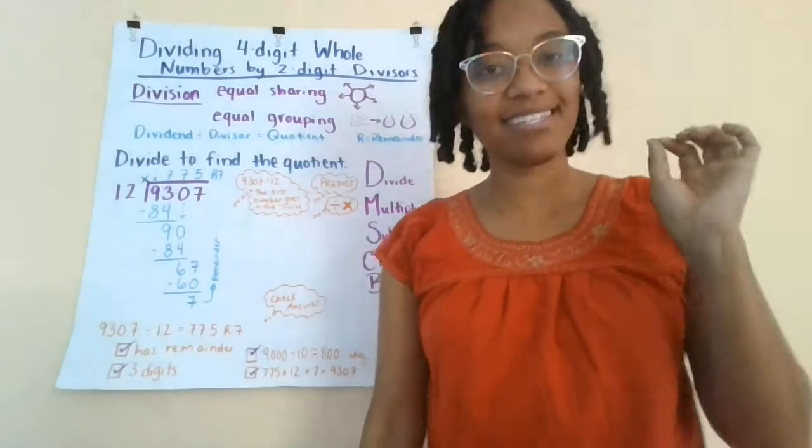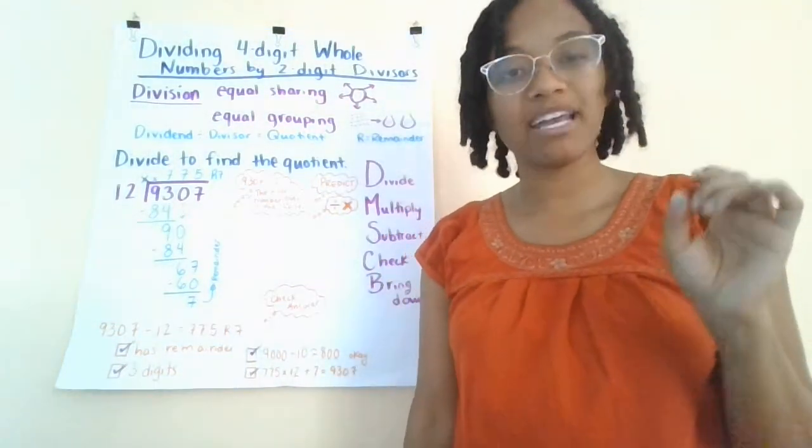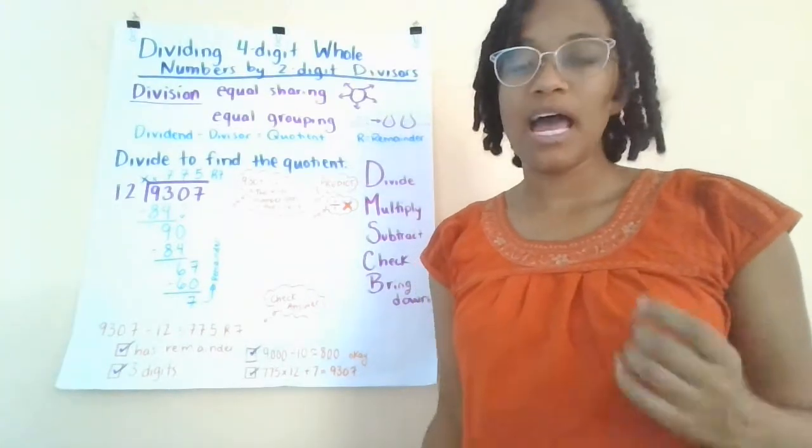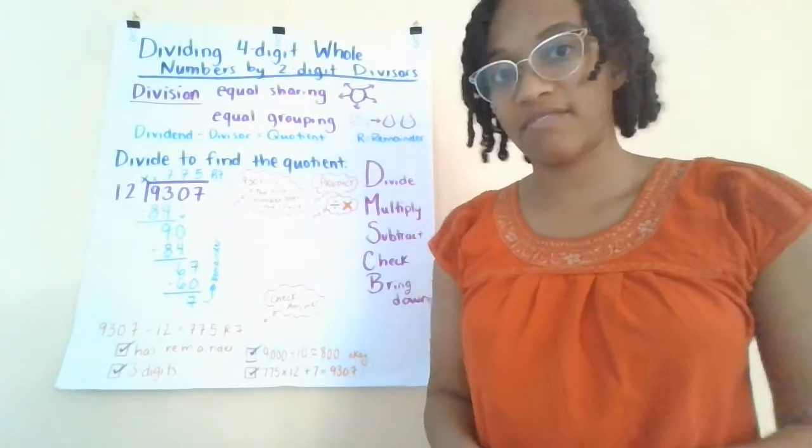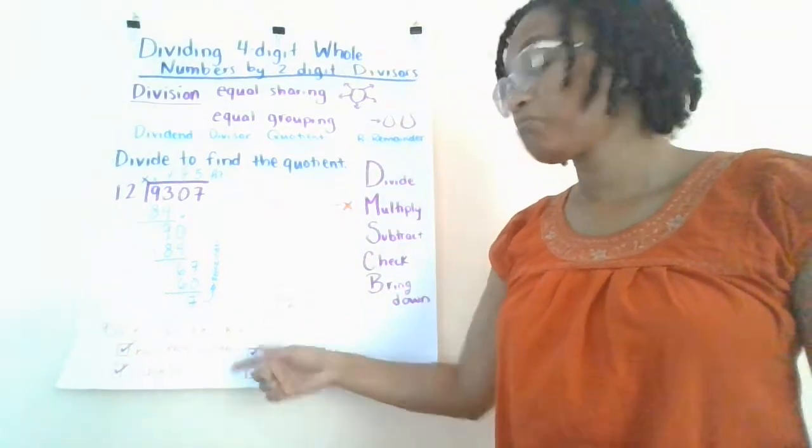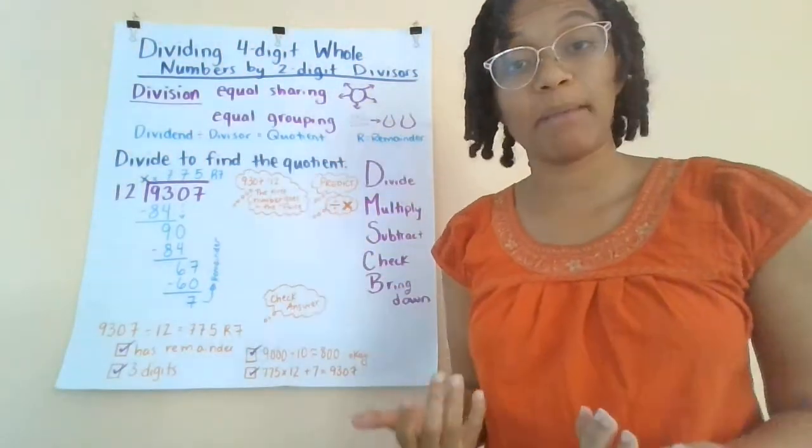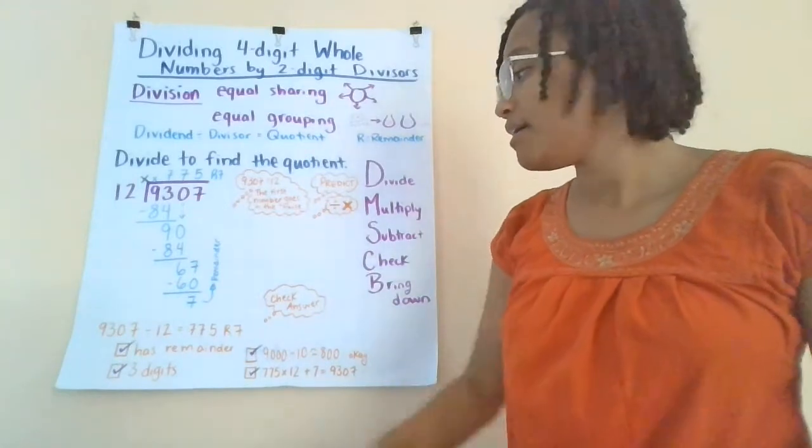So first I need to check. Does it have a remainder? Remember, we predicted that this number would have a remainder because we noticed that our dividend was odd and our divisor was even. And we thought that maybe it wouldn't go in evenly. Well, let me check. The remainder 7. It does have a remainder. So that's good. That fit my prediction and I'll give that a check.